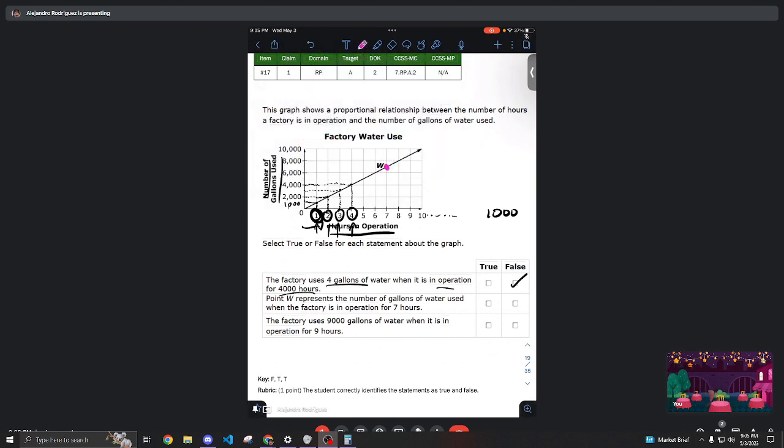If I look at point W and look down, it tells me that point W is seven hours of operation. So for seven hours of operation, we're gonna use seven thousand gallons of water. Is it true that point W represents the number of gallons of water used when the factory is in operation for seven hours? The answer is yes.